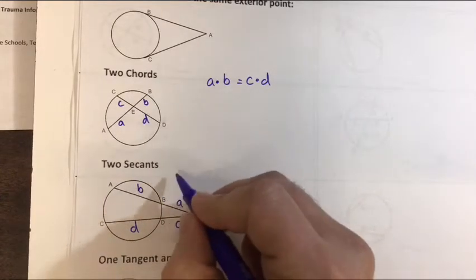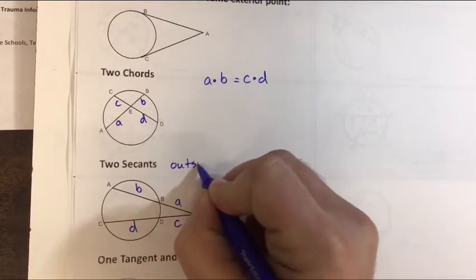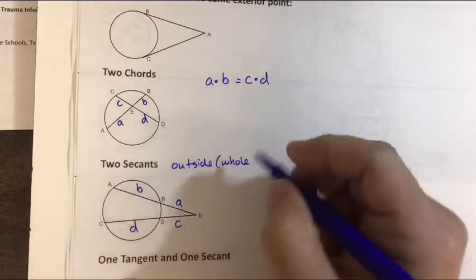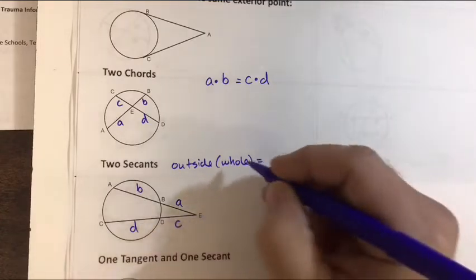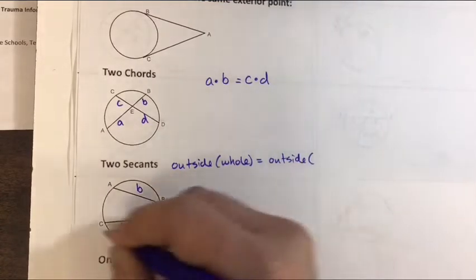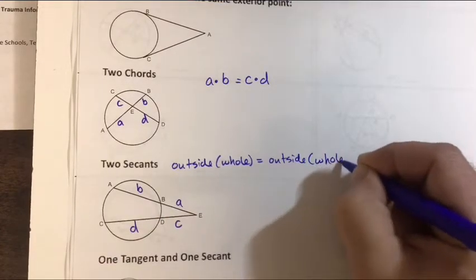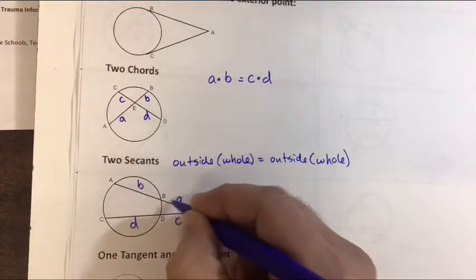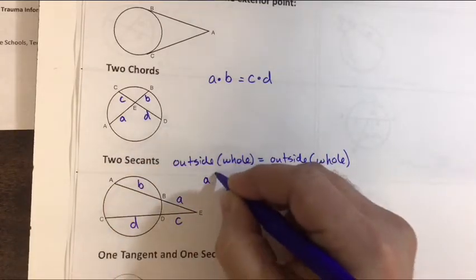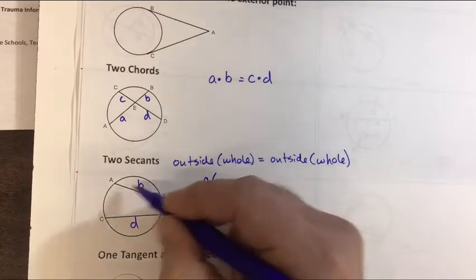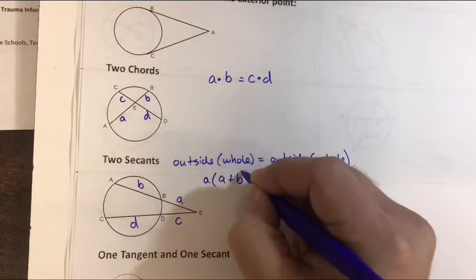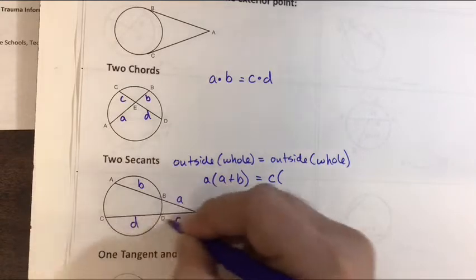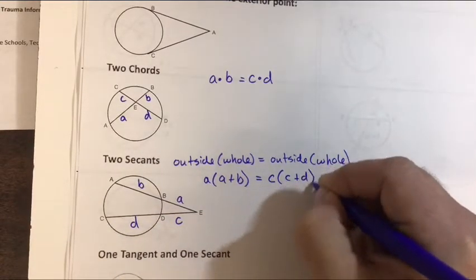In words what I like to say for two secants is that the outside part times the whole secant segment length must equal the other outside part times the other whole secant segment length. So for my specific letters the outside portion A times the whole thing, well to think of the whole thing remember part plus part equals whole. So the whole thing is A plus B. And the other side for the other secant the outside part is C and the whole thing is C plus D.